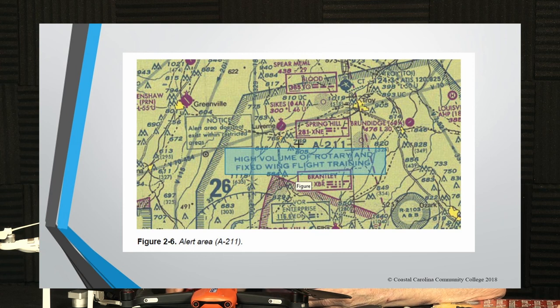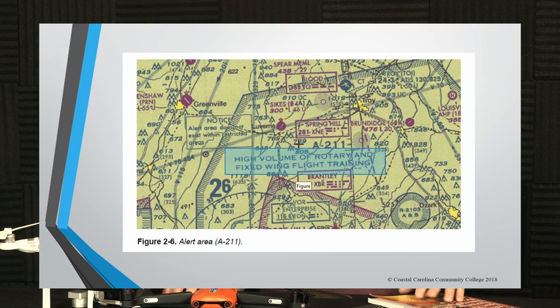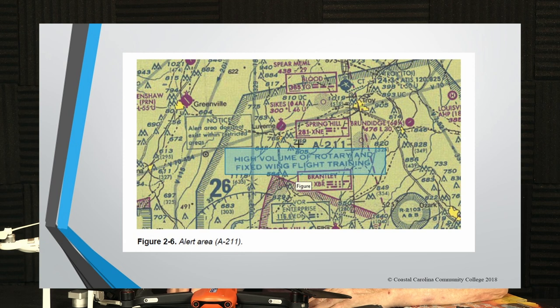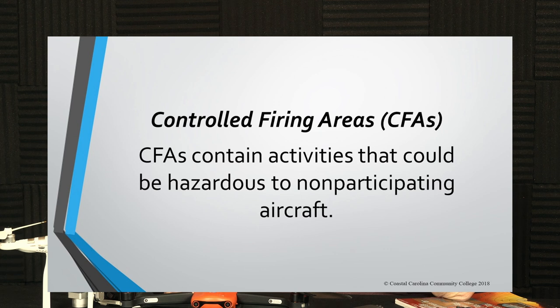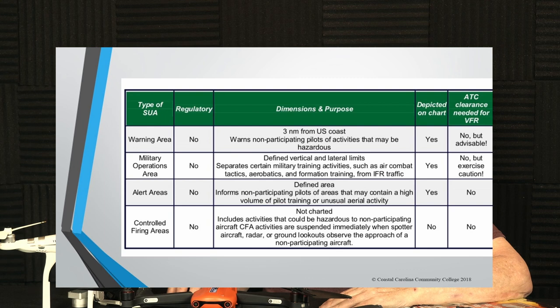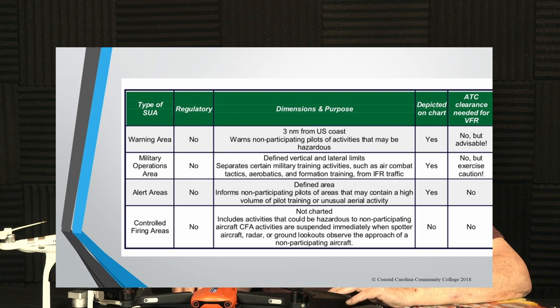If you look at figure 2-6 in the book, you'll see an alert area and how it's designated, and what kind of extraordinary risk you may be facing. Controlled firing areas — CFAs — are areas that could be hazardous to non-participating aircraft. Take a moment to study the chart available on the internet — it talks about whether it's regulated and what the purposes are. This is a good way to review the content we've been presenting.